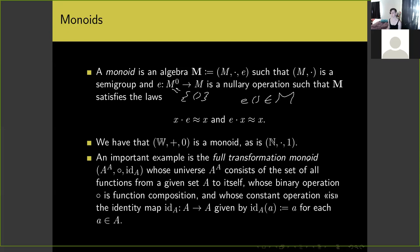An important example of a monoid is the full transformation monoid. If I take any set A, I can form a monoid whose universe is A^A — the set of all functions from A to itself — where the binary operation is function composition. The constant operation is the identity map on A, where the identity map applied to any element a gives back that same a. This is a very natural example of a monoid.